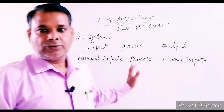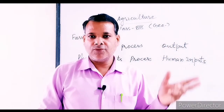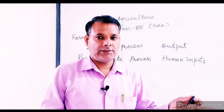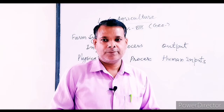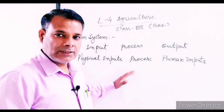Physical inputs include sunshine, rainfall, temperature, soil, slope, and drainage. Processing steps include plowing, sowing, spraying, weeding, and harvesting. Human inputs include money, workers, fertilizers, machinery, pesticides, and stores. After all the processes, by adding manures and seeds, we get crops as an output.